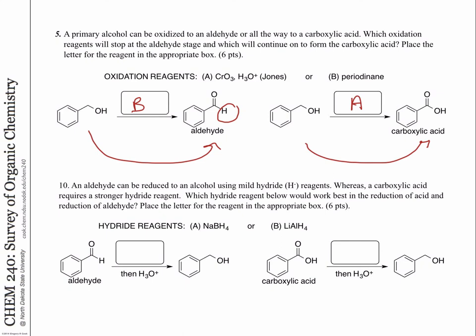And the reverse — the reduction. The carboxylic acid requires the stronger hydride reagent. We have sodium borohydride or lithium aluminum hydride, and it was the lithium aluminum hydride which is the stronger one. So you needed that one to reduce the carboxylic acid — so the second one, B, was the only answer. Actually the first one, everyone should have got a point because A or B would work. You can use A without a problem. So there's reduction and oxidation.